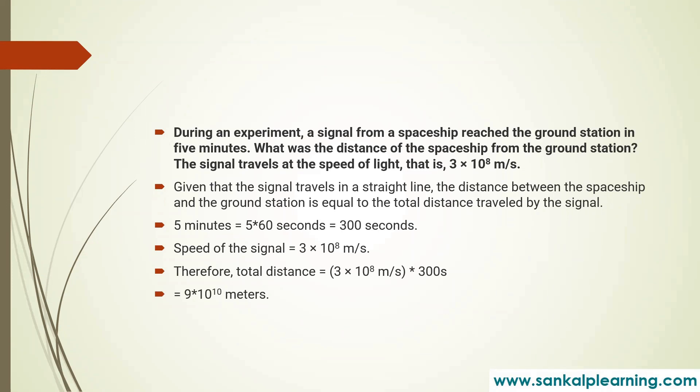Five minutes is first converted into seconds by multiplying by 60, so 5 into 60 is 300 seconds. The speed is given as 3×10⁸ meter per second. Therefore the total distance is 3×10⁸ into 300, because distance equals speed into time. Simplifying, we get 9×10¹⁰ meters. This is the final answer.